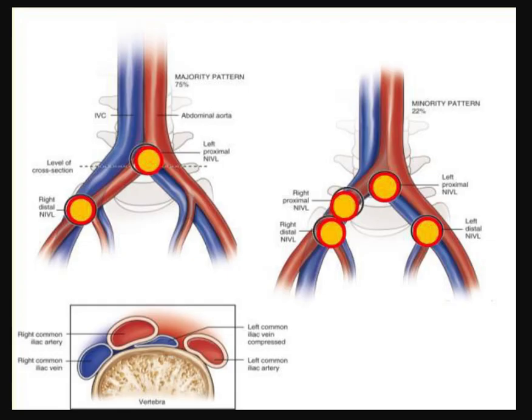Today I'm going to show you how to look through your CT scans to see if you have May-Thurner physiology. May-Thurner physiology refers to a specific pattern of compression between the artery, the vertebra, and the venous system.